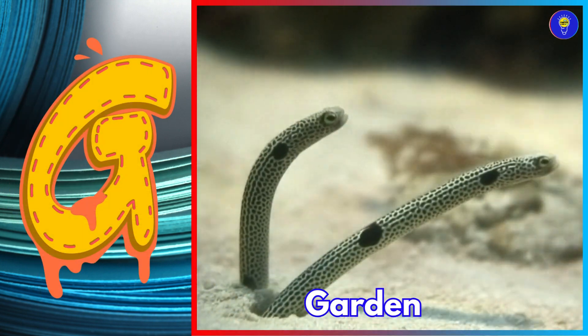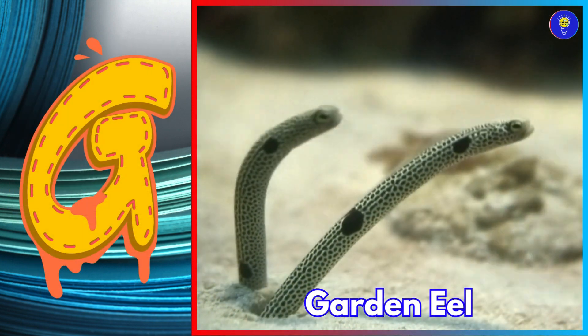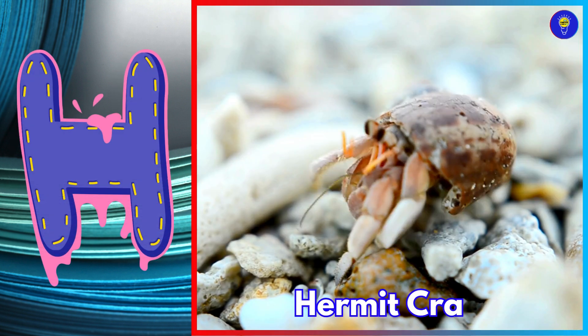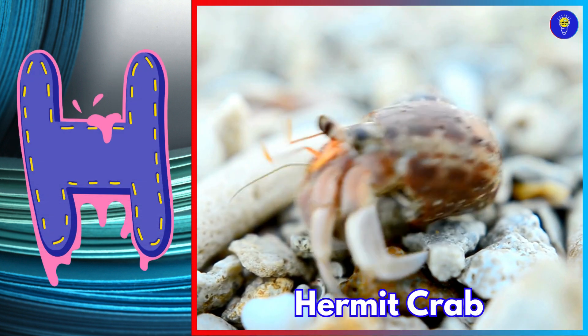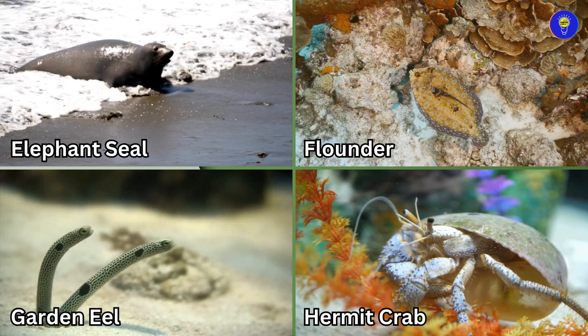G is for garden eel. Guh, garden eel. H is for hermit crab. Ha, hermit crab.